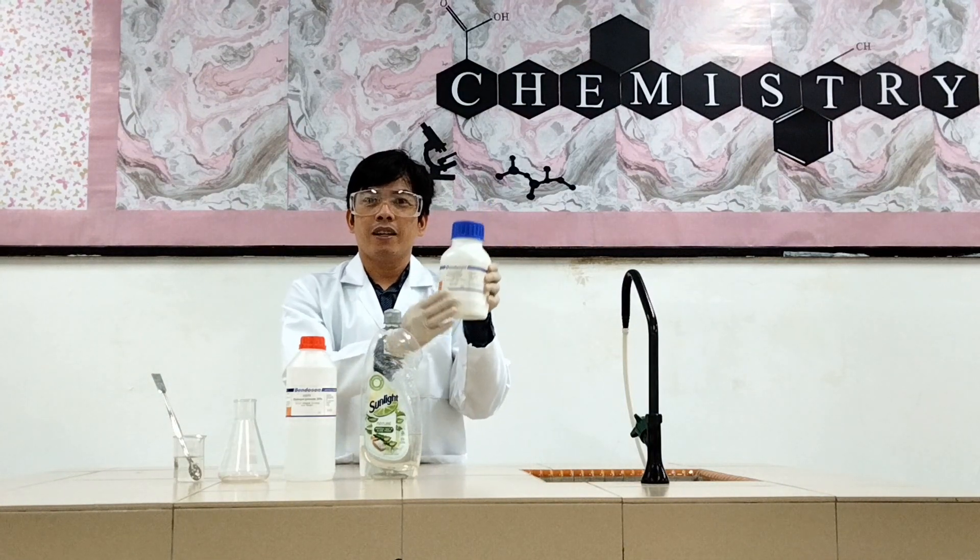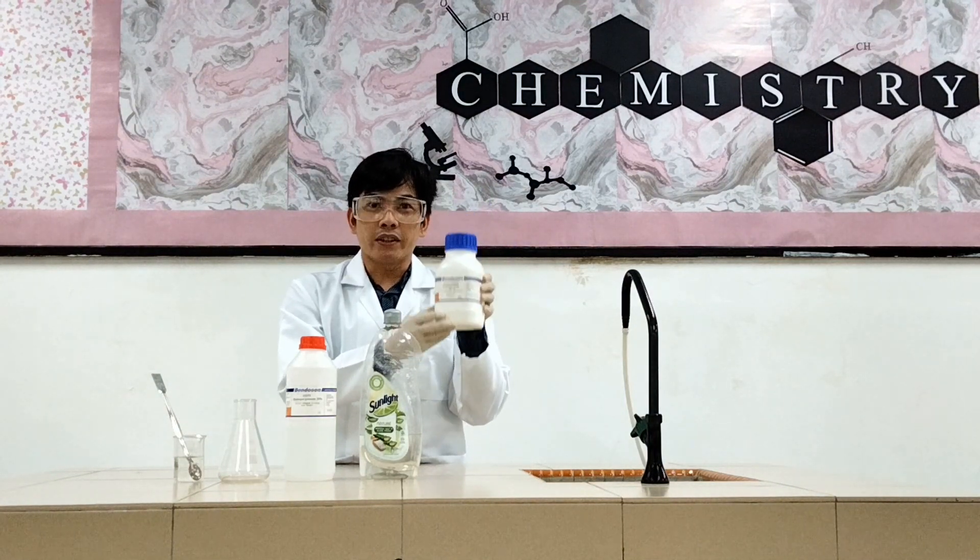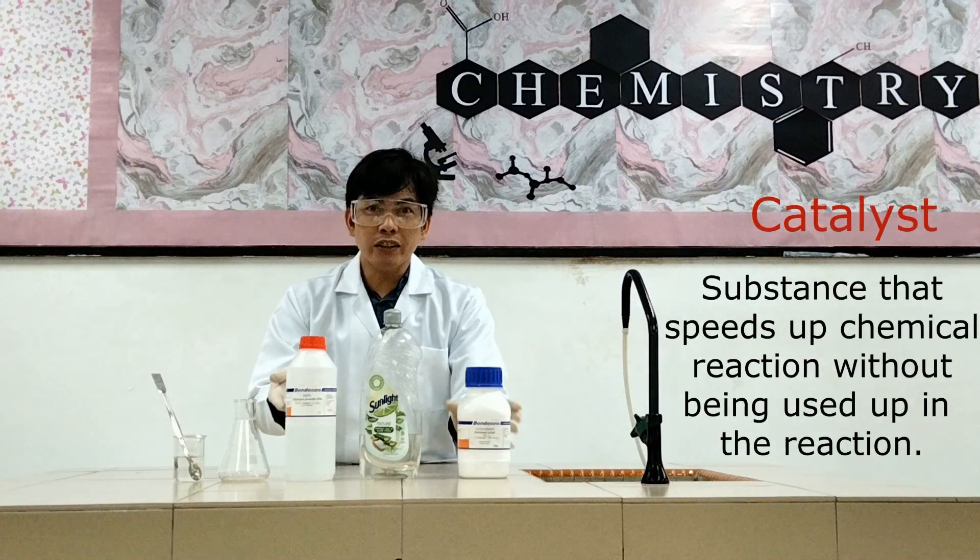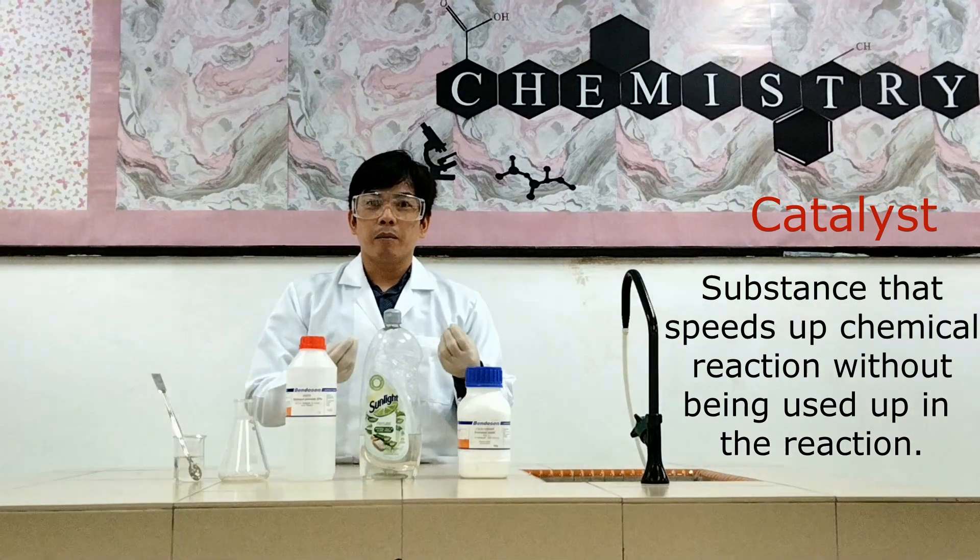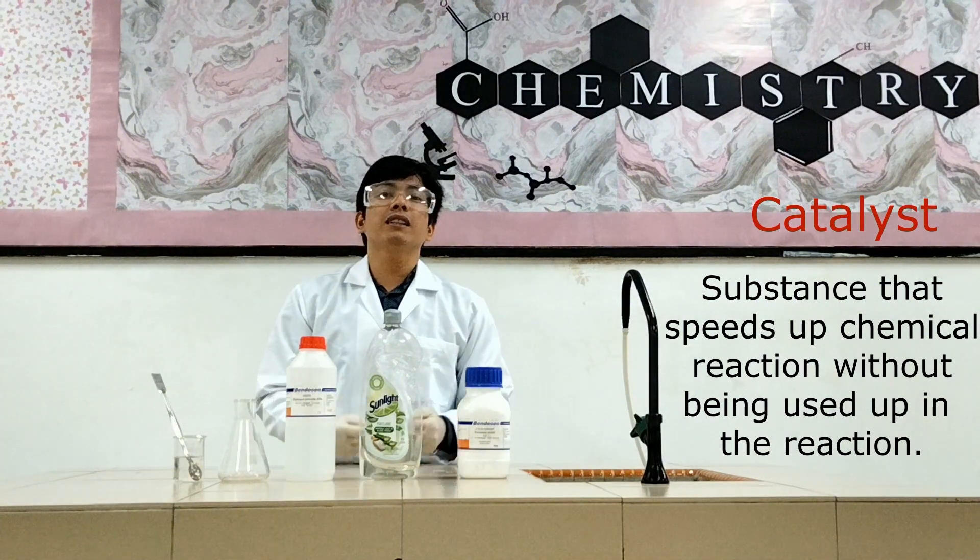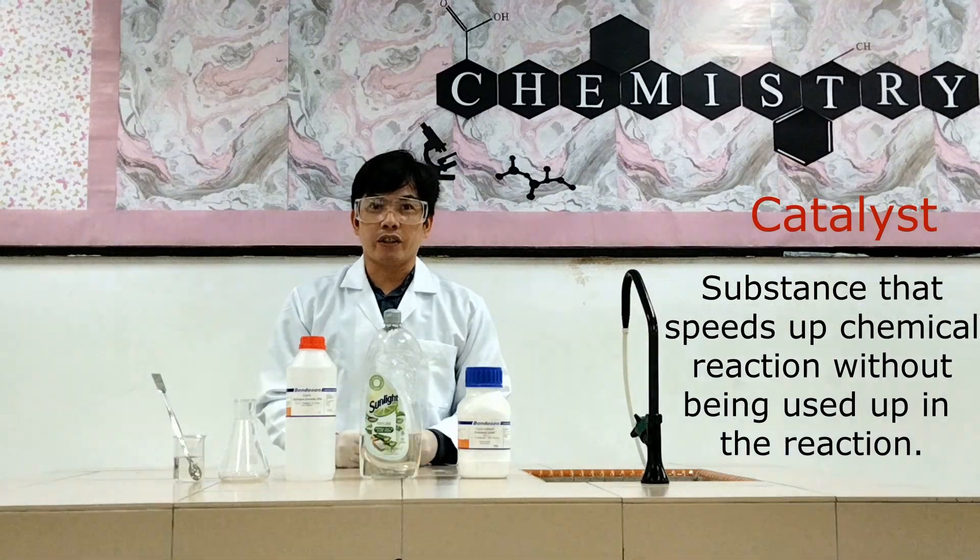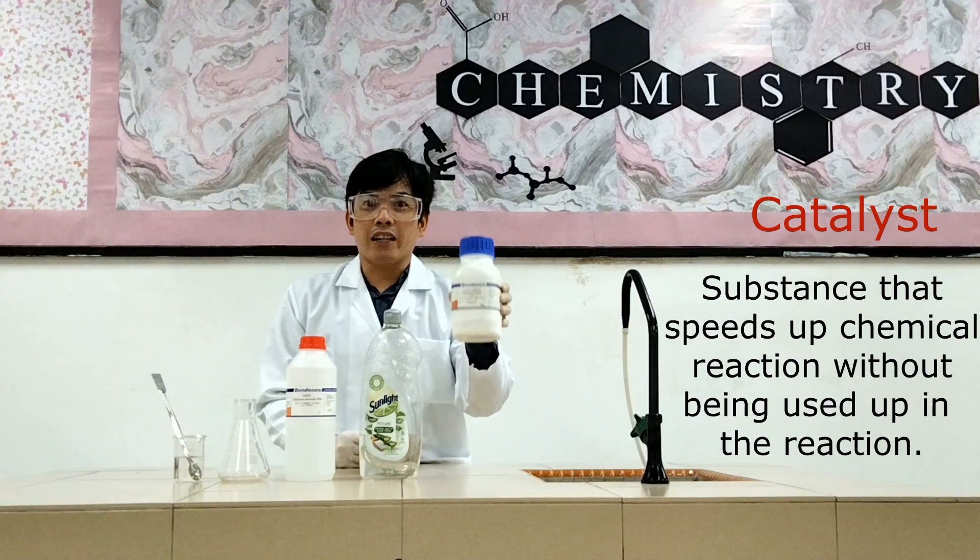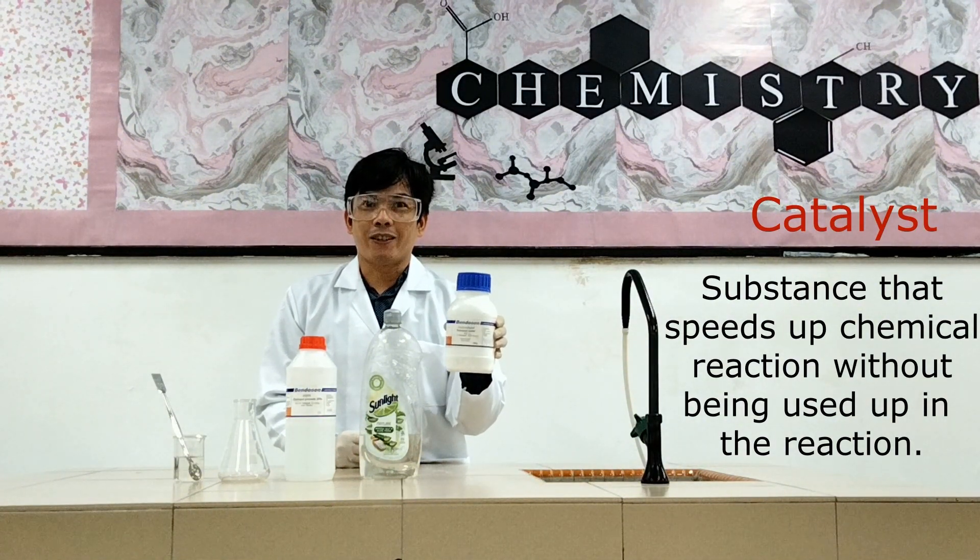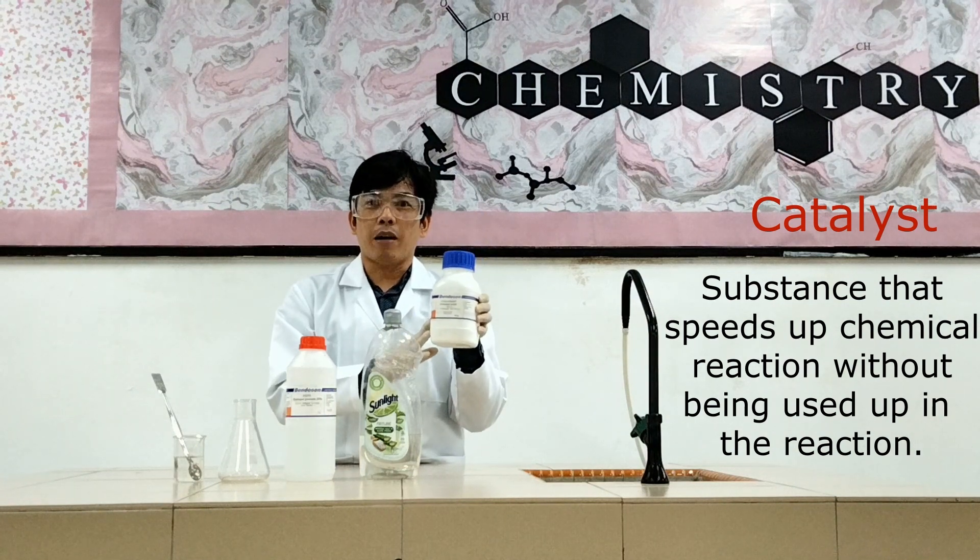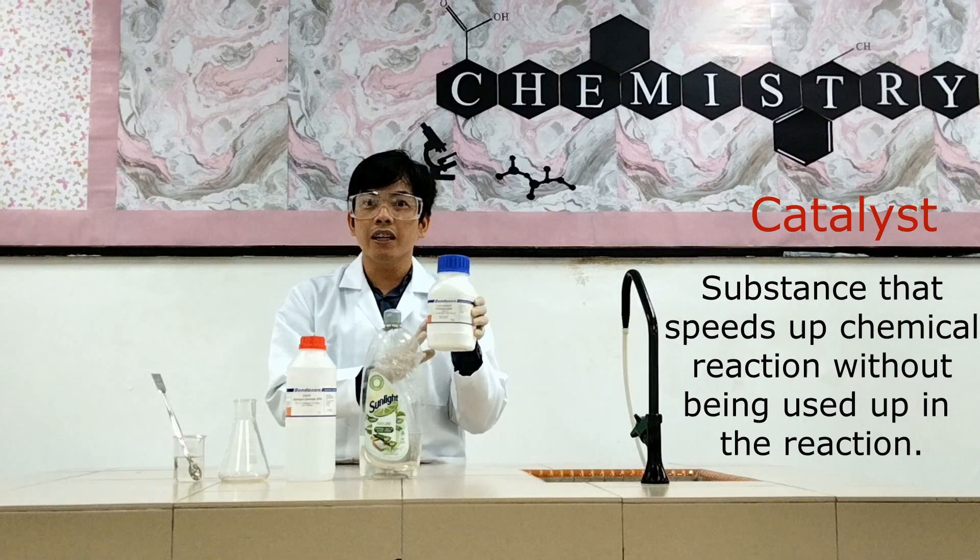And then next, the potassium iodide. Potassium iodide will serve as the catalyst. Because hydrogen peroxide decomposes by itself naturally but it's a very slow process. It's a very slow chemical reaction. And potassium iodide will make it faster. So it is a catalyst meaning to say it speeds up the chemical reaction without being used up.